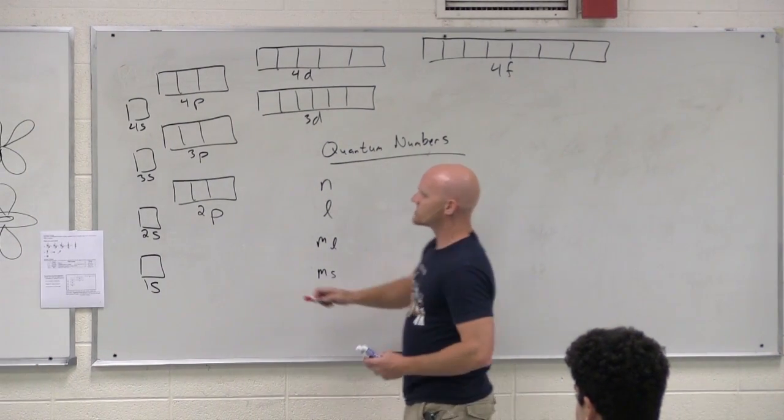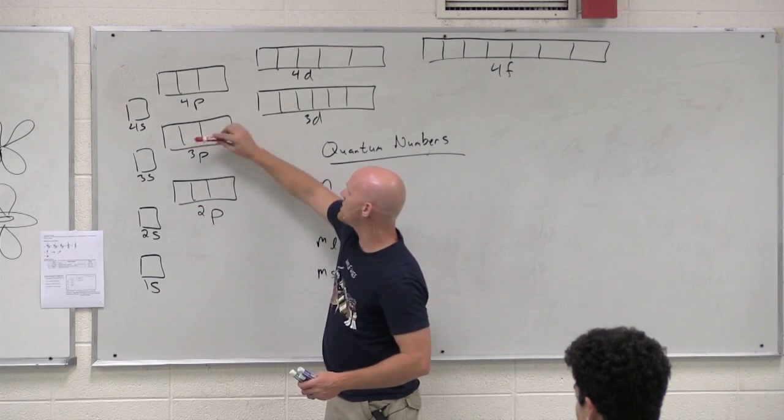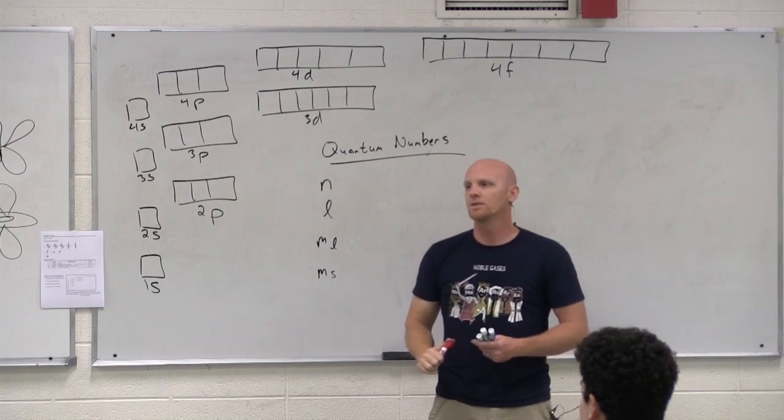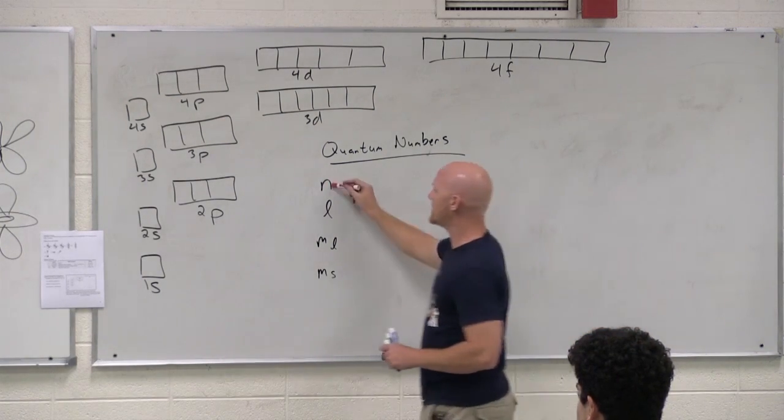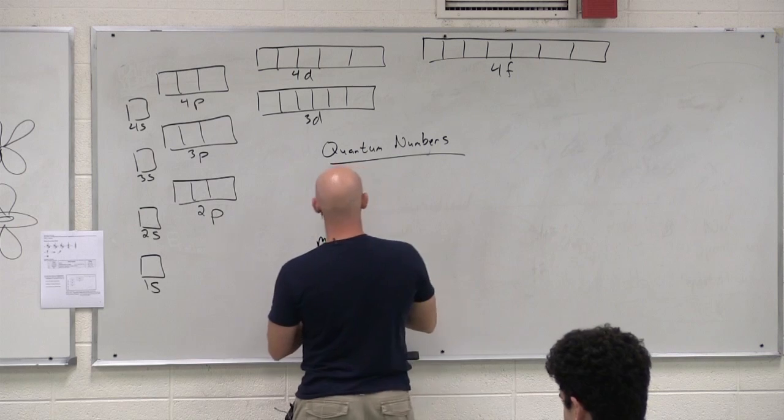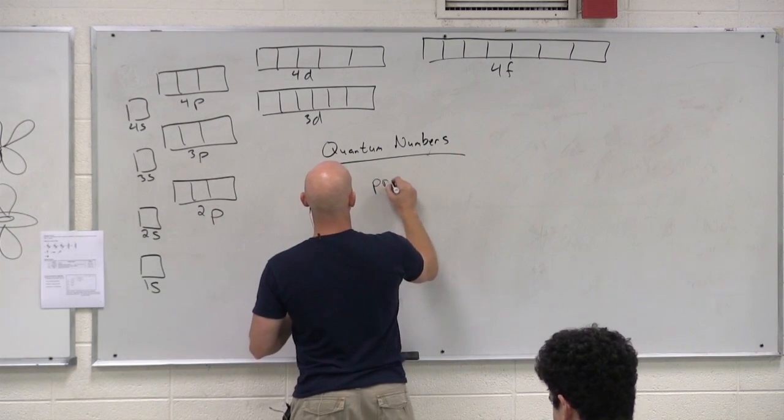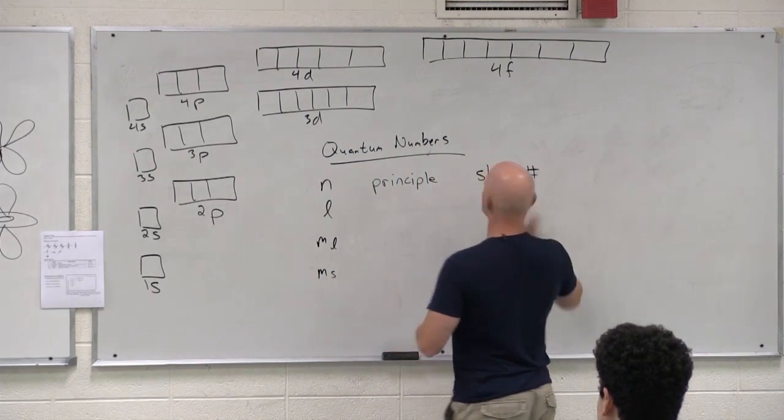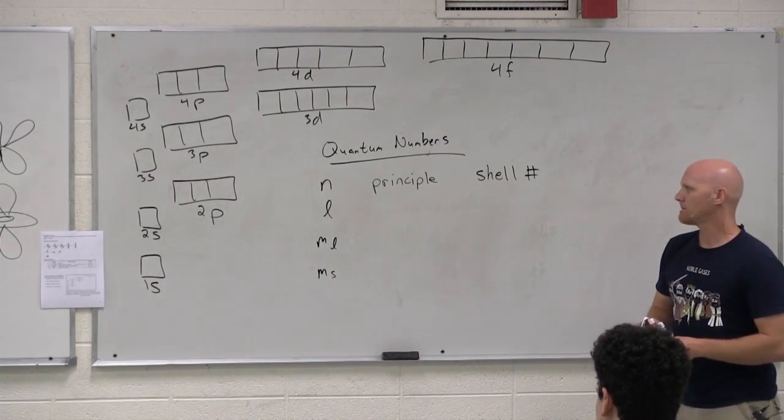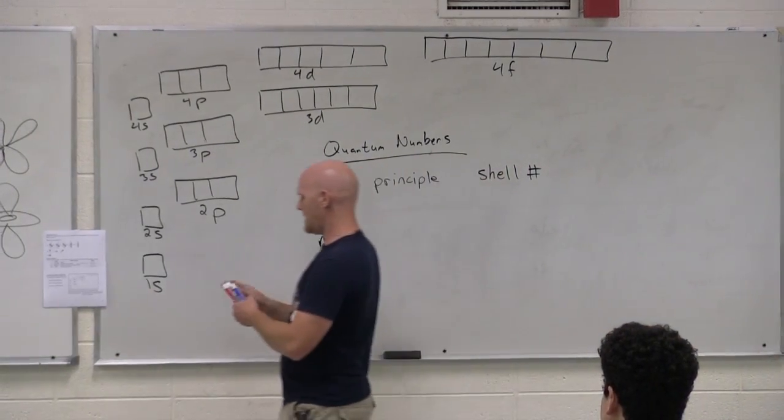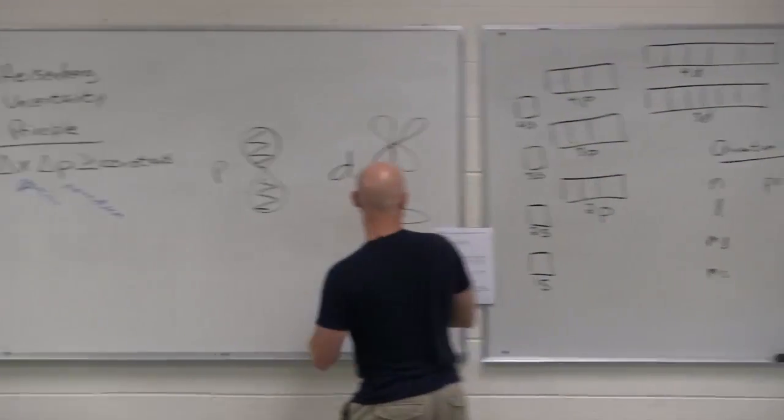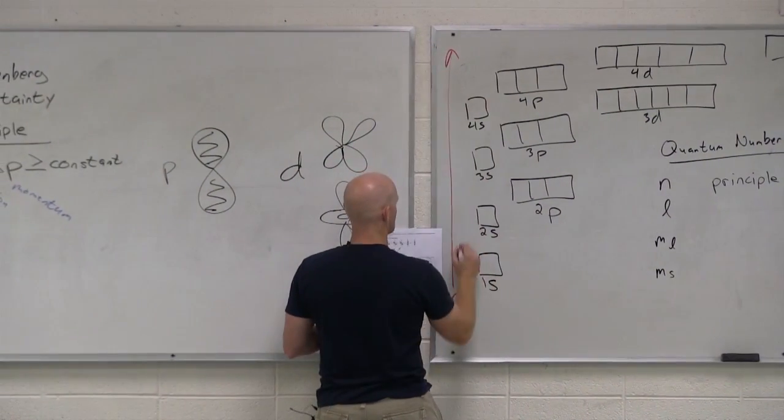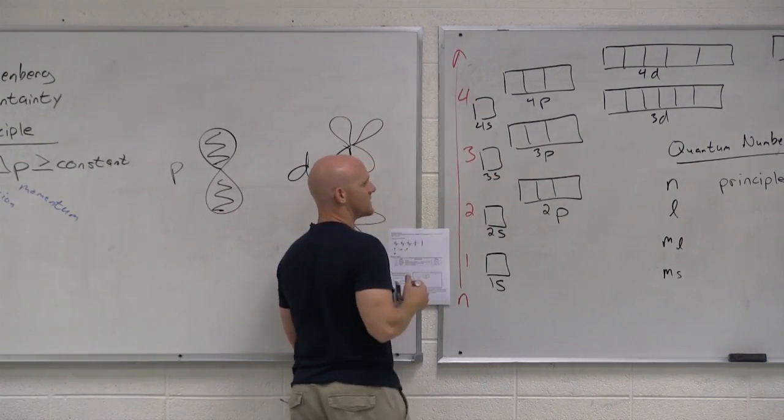So first thing I might want to know is just which shell. This is the first shell, second shell, third shell, and fourth shell. And again, there's an infinite number of shells. They just keep going up. So first question I might do to narrow this down is what shell do you live in? That's what N actually means. N is the shell number. So we call it the principal quantum number. And this is all on your handout there. And it tells me the shell number. Cool. So if you notice here, N was the same N we had when we were doing electronic transitions here. And here's one, two, three, and four, and so on and so forth.